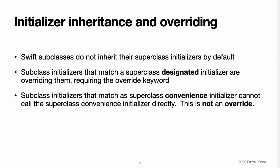If you want a custom subclass to present one or more of the same initializers as its superclass, you can provide a custom implementation of those initializers within the subclass. When you write a subclass initializer that matches a superclass designated initializer, you are effectively providing an override of that designated initializer. Therefore, you must write the override modifier before the subclass's initializer definition. The presence of the override modifier prompts Swift to check that the superclass has a matching designated initializer to be overridden and validates that the parameters for your overriding initializer have been specified as intended. Note: you always write the override modifier when overriding a superclass designated initializer, even if your subclass's implementation of the initializer is a convenience initializer.